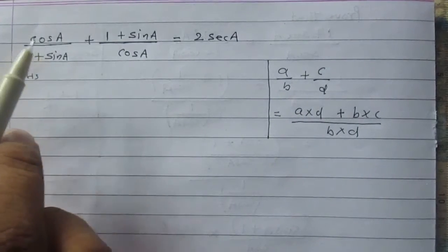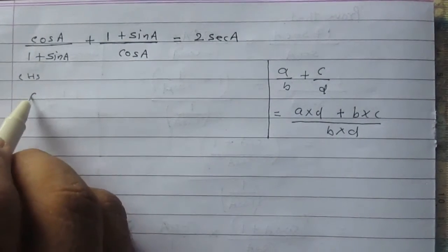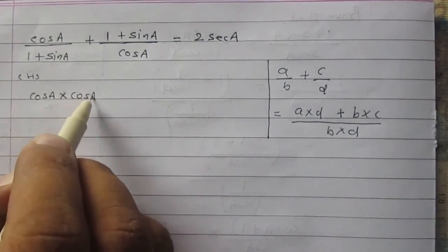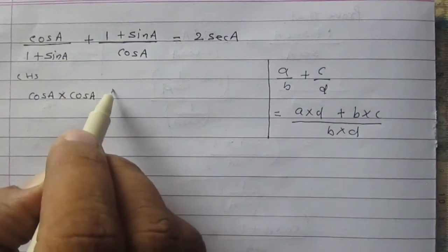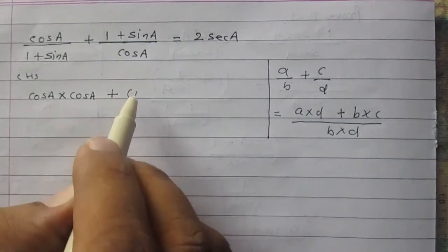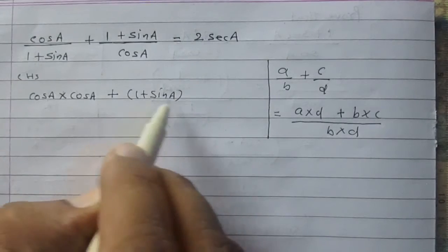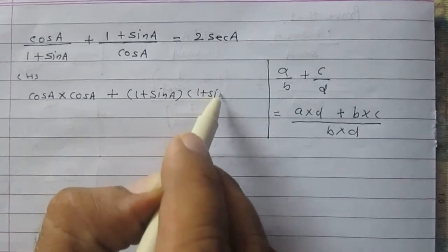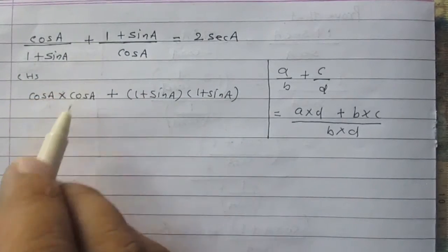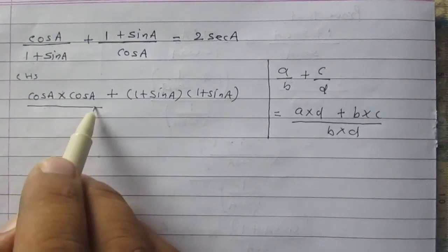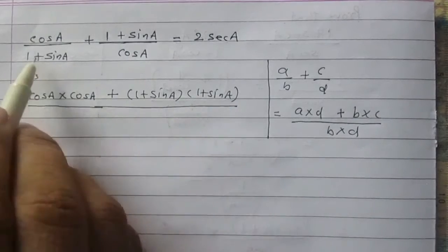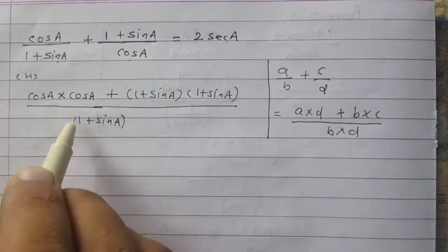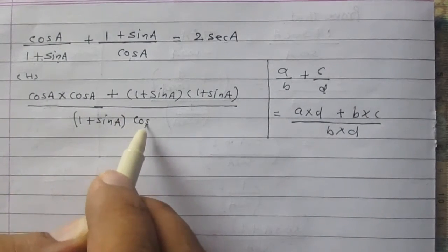we can write the left hand side as cos A multiplied by cos A, then plus 1 plus sin A whole multiplied by 1 plus sin A. And then in the denominator, the multiplication of 1 plus sin A and cos A.